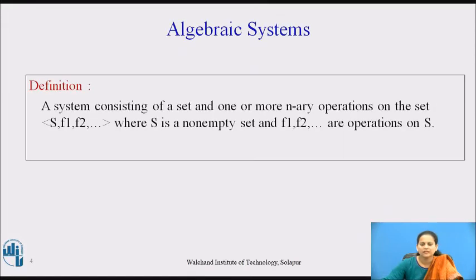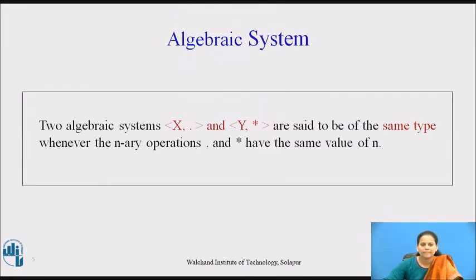To start with, let us see how an algebraic system is defined. A system consisting of a set and one or more n-ary operations on the set, given by (S, f1, f2, ...), where S is a non-empty set and f1, f2, etc. are operations on S.